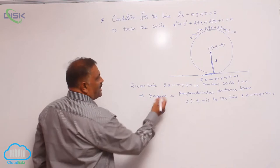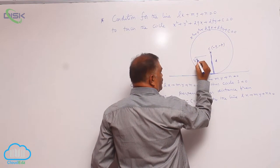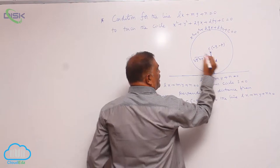Now, you see radius of this circle we know already this is root of g square plus f square minus c.